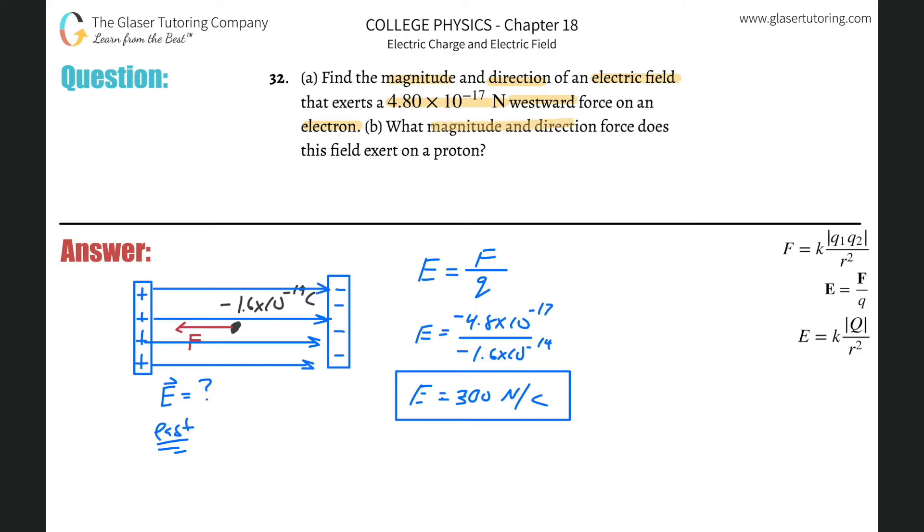Letter B, what is the magnitude direction force does this field exert on then a proton? So now we got to talk about, we're keeping the field constant, but now we're going to change, instead of this being an electron, we're going to change it to a proton. So, why don't I just put in another dot, make this thing positive.